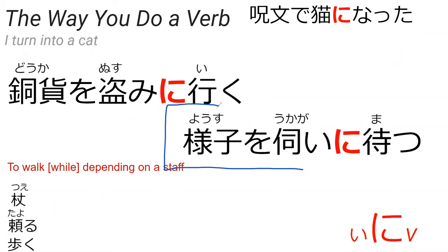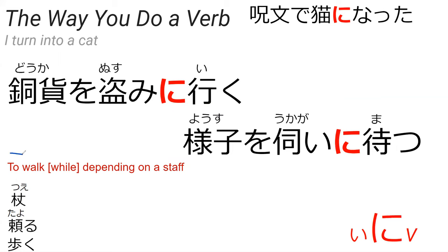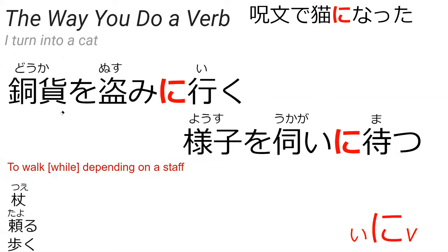Do you know what 様子をうかがう meant? That was from last week. 様子をうかがい... to wait for the situation to unfold. Yes, exactly. So you can do this — for example, 'walk while depending on a staff.' 頼る is to depend on, 杖 is staff, and 歩く is to walk. How do you think you would say this?